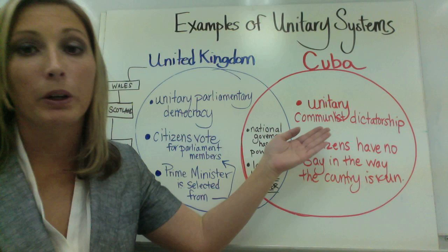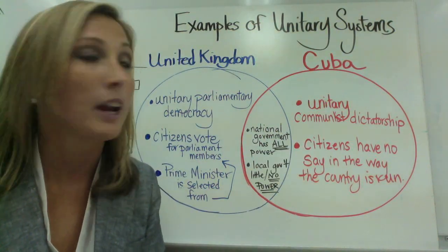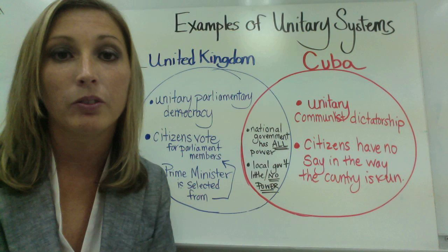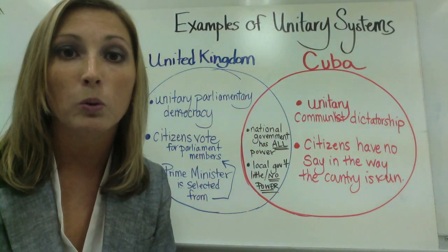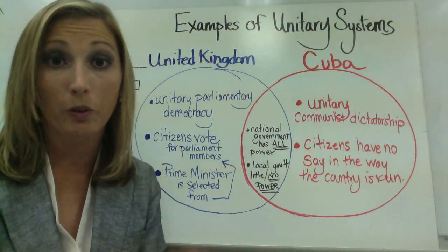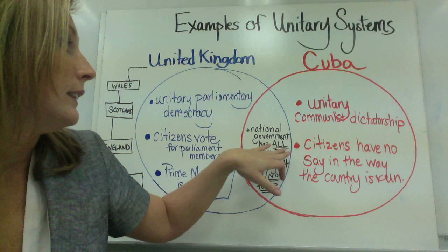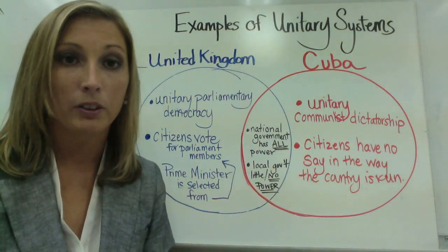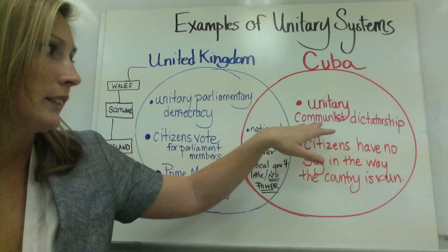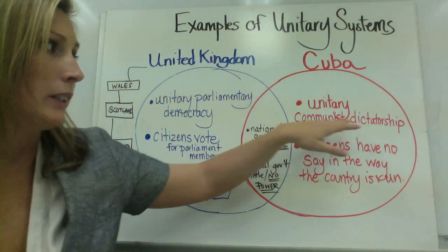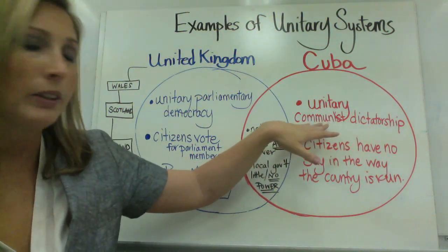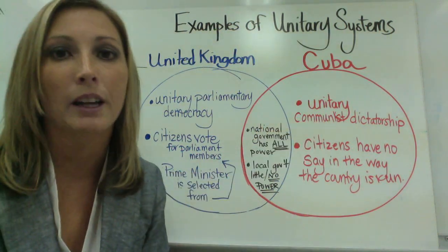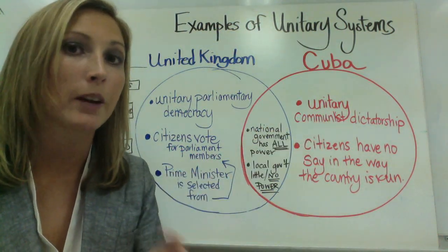In Cuba, the country has been under a unitary communist dictatorship since 1959, when Raul and Fidel took over. Citizens have no say in the way the country is run whatsoever. One important consideration is that communism is a type of economy, not a type of government — we'll discuss that further when we get to types of economies.